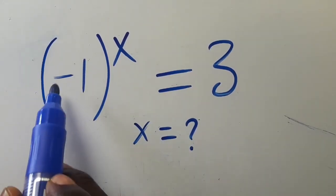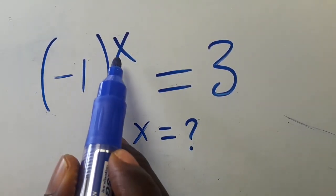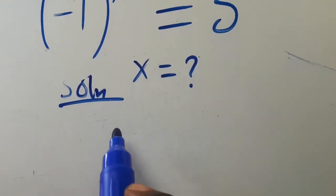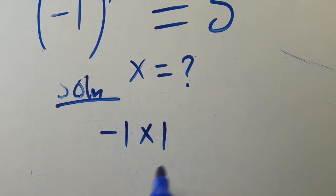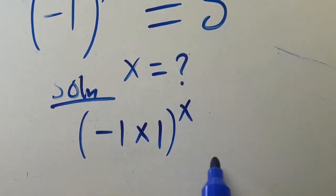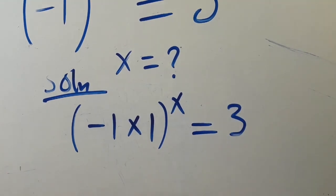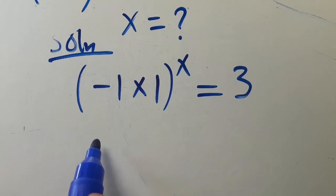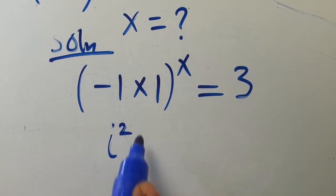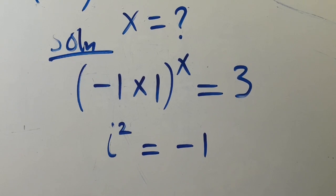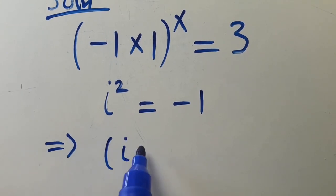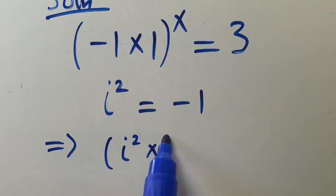We have open brackets minus one close bracket to the power of x equals three. From here we can have minus one times one, which gives us back our minus one, then we close the brackets to the power of x equals three. But from complex numbers, we know that i squared equals minus one, so by putting it here we have this as i squared, then multiply by one.